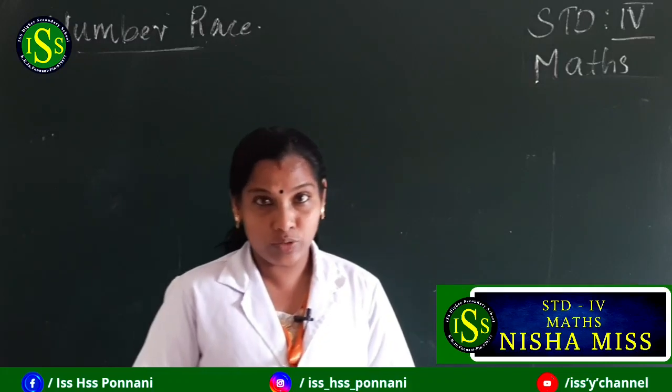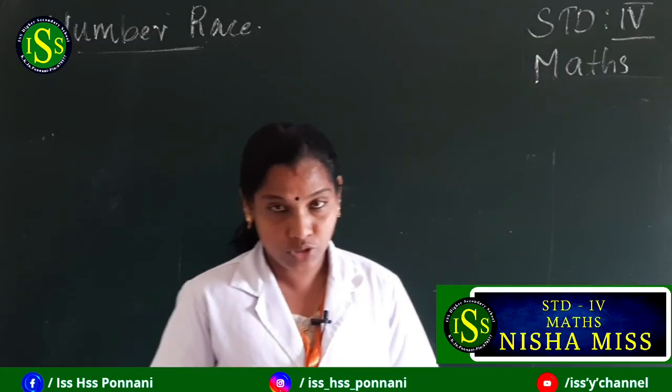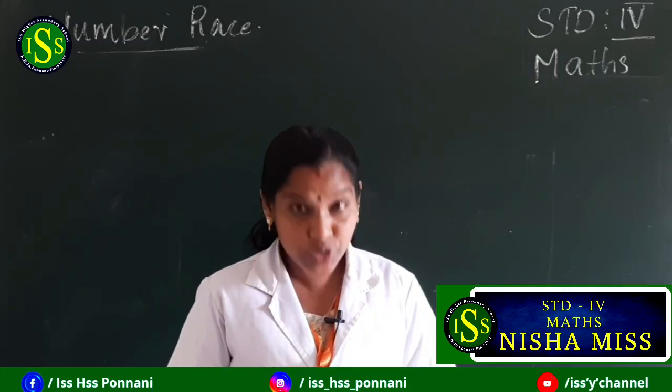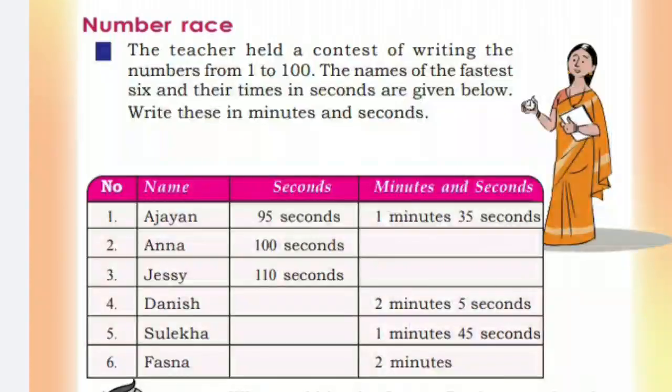I will read the textbook topic question. All of you look at page number 28. The teacher held a contest of writing the numbers from 1 to 100. The names of the fastest 6 students and their times in seconds are given below. Write these in minutes and seconds — that is the question.